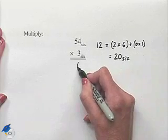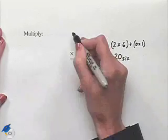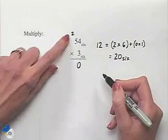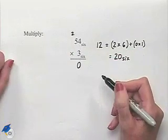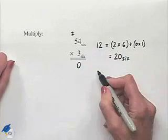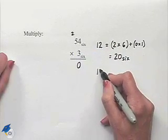We'll place our 0 in our 1's place, and we'll take our 2 and write it in the next column. We're going to use that in addition in a few moments. We now proceed 3 times 5. In base 10, 3 times 5 would be 15.